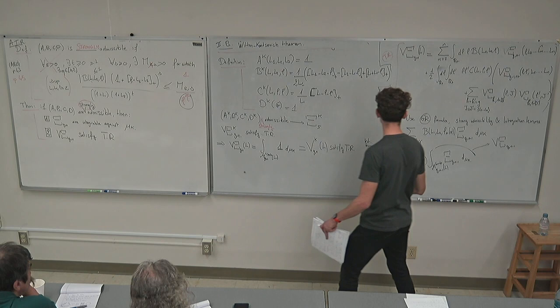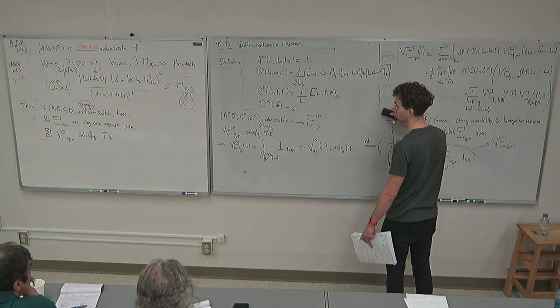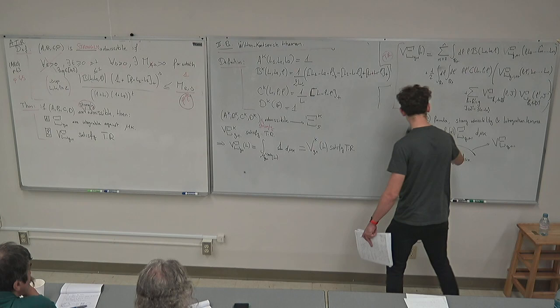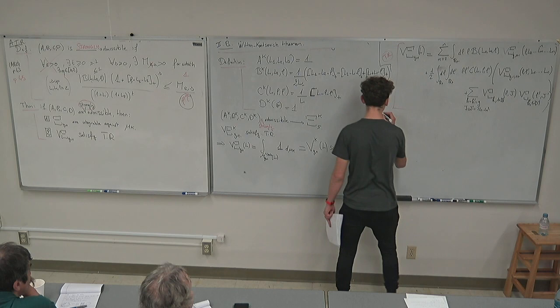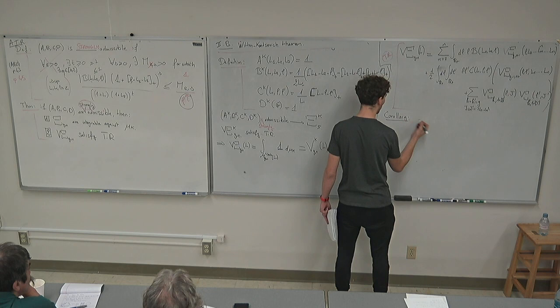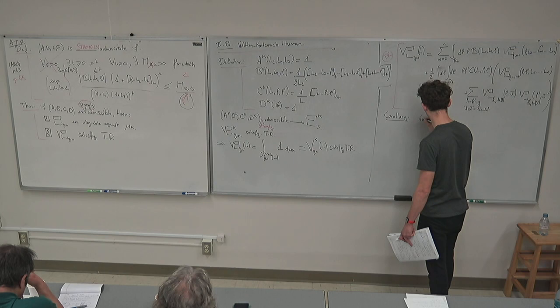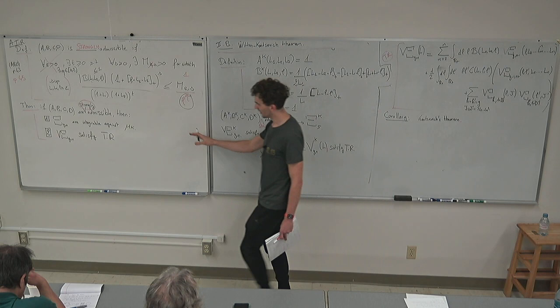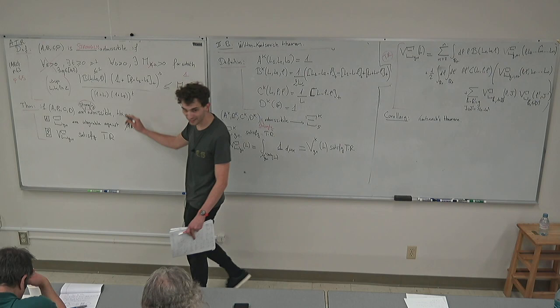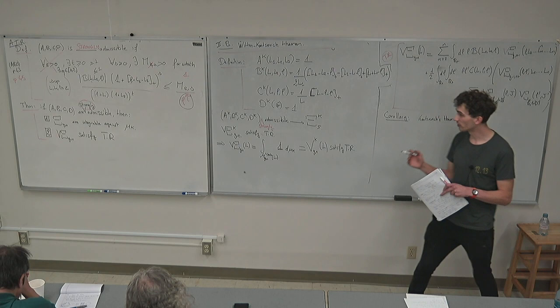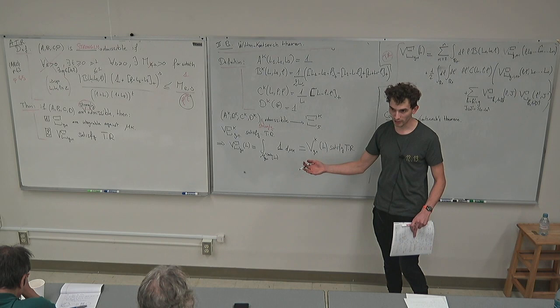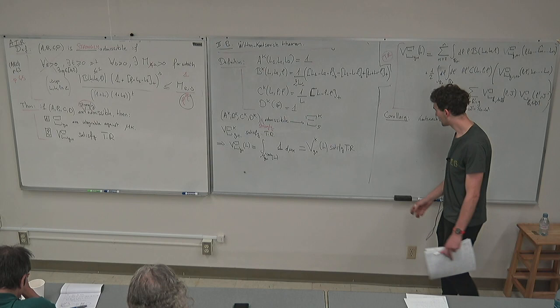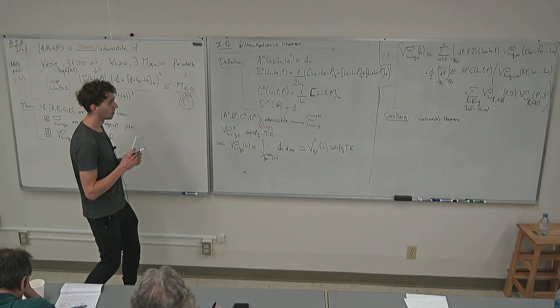Our proof is completely parallel to Mirzakhani's proof, but in the combinatorial world — Mirzakhani's proof was in the hyperbolic world. We use exactly the same steps and arguments. That is it for TR. Let's turn to discrete TR.